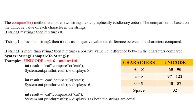When both the strings are equal, the function returns zero. If string one is less than string two, it will return a negative value — specifically the difference between the Unicode values of the differing characters. The third possibility is a positive value, returned when string one is greater than string two. That positive value is also the Unicode difference between the characters being compared.